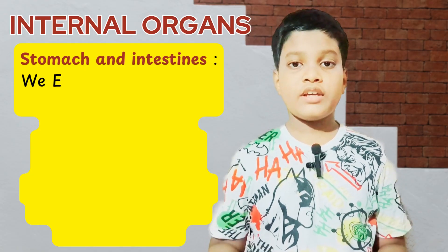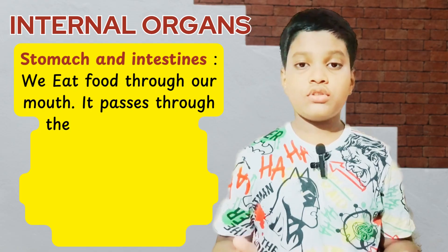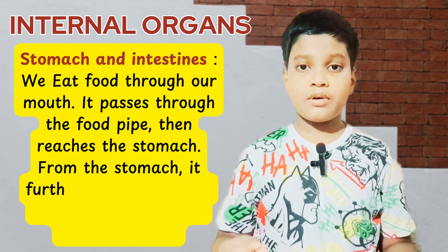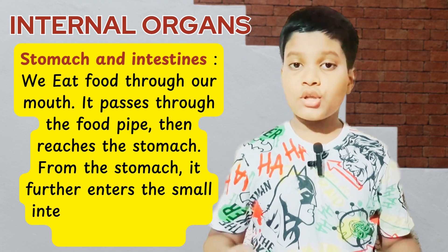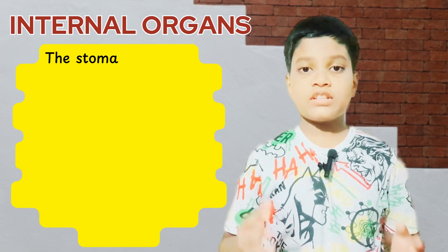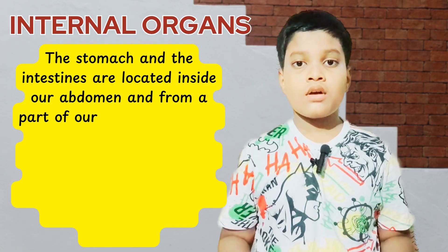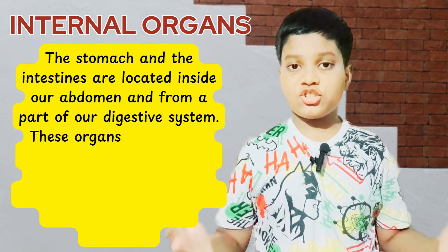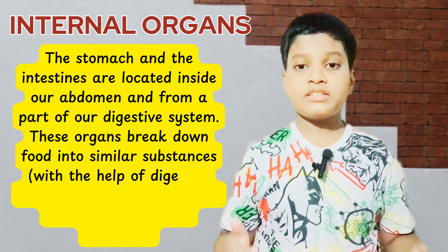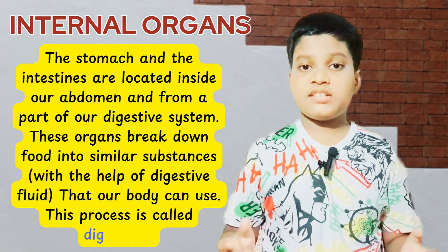Stomach and intestines: we eat food through our mouth. It passes through the food pipe, then it reaches the stomach. From the stomach, it enters the small intestine and then to the large intestine. The stomach and the intestines are located inside our abdomen and form a part of our digestive system. These organs break down food into simpler substances that our body can use. This process is called digestion.